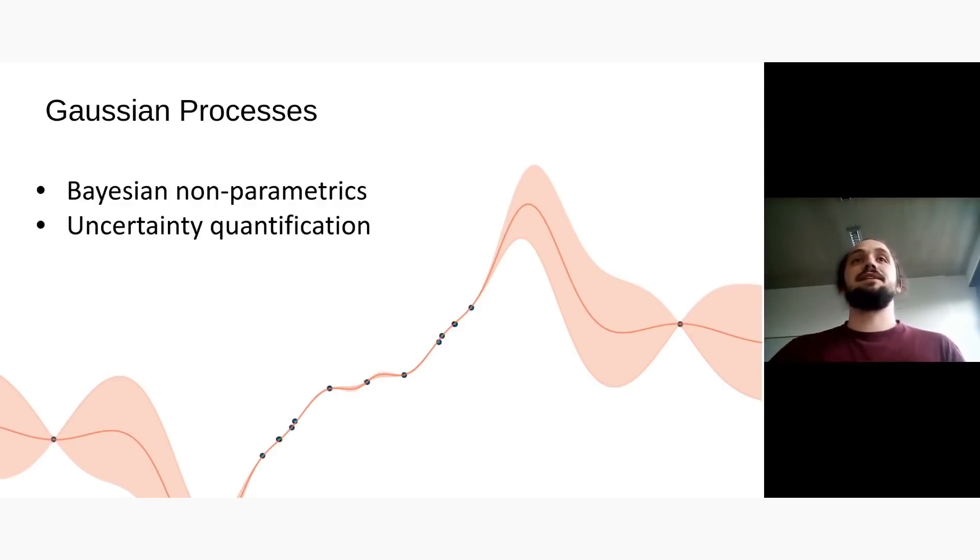What it means is that we can make uncertainty quantification about the predictions we make and other really cool stuff like having easy hyperparameter optimization without any cross-validation or anything like this.